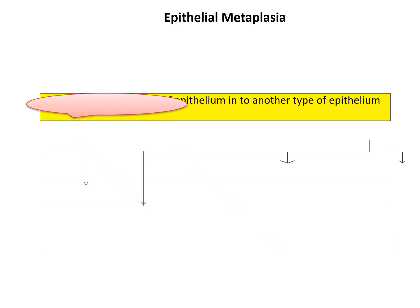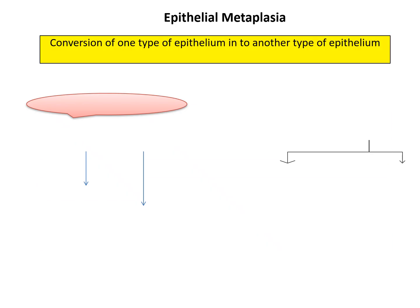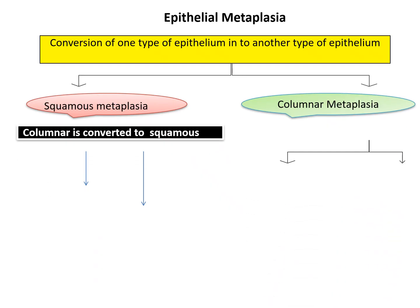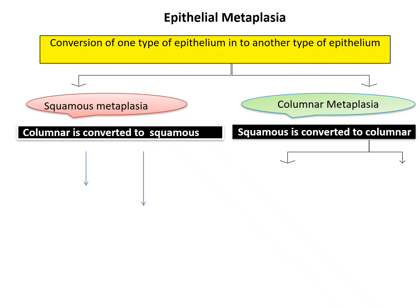Epithelial metaplasia is the conversion of one type of epithelium into another. There are two types: squamous metaplasia and columnar metaplasia. Squamous metaplasia is conversion of columnar epithelium into squamous epithelium — the ultimately formed epithelium is squamous. In columnar metaplasia, squamous epithelium is converted into columnar epithelium — the finally formed epithelium is columnar.